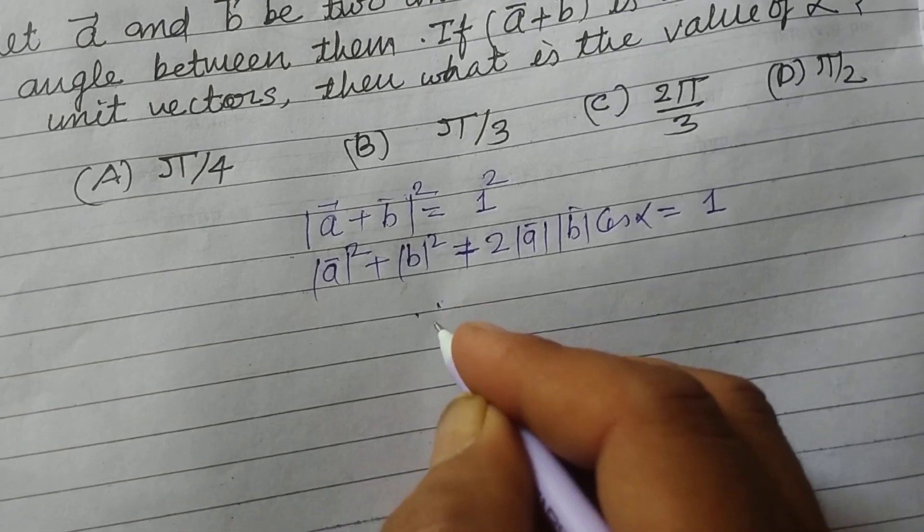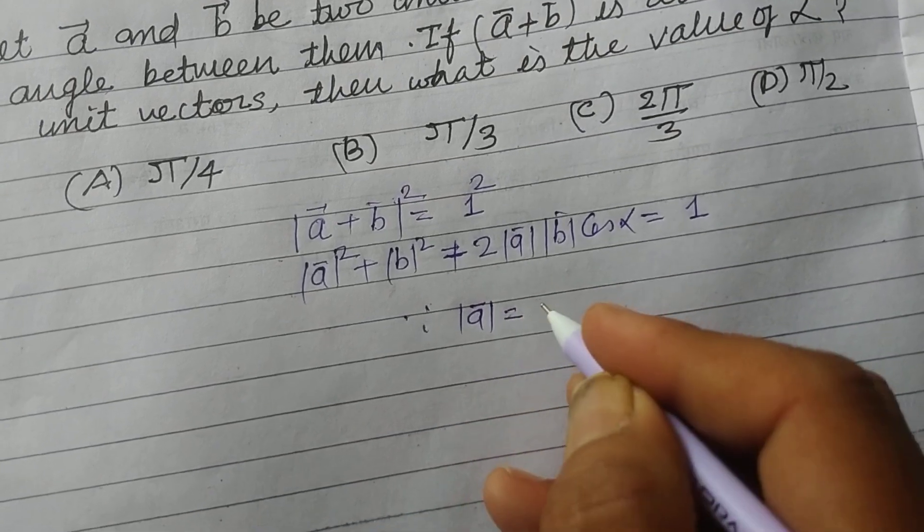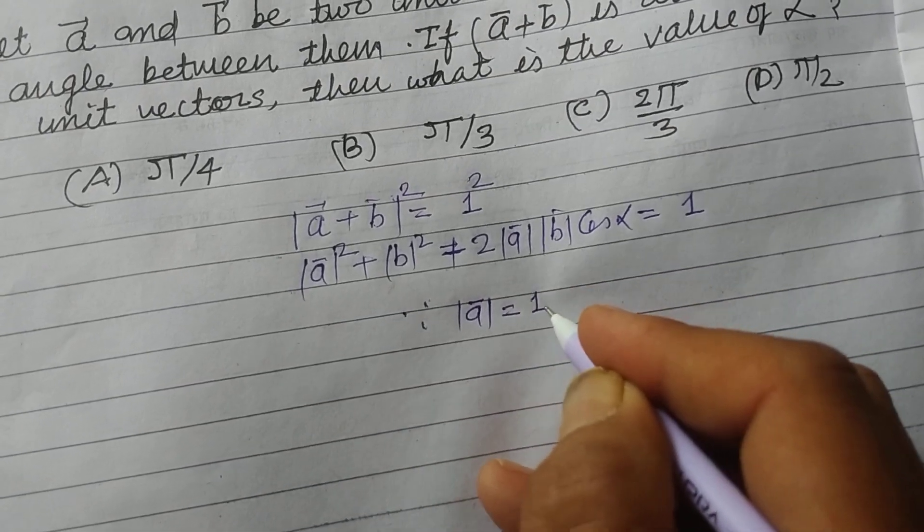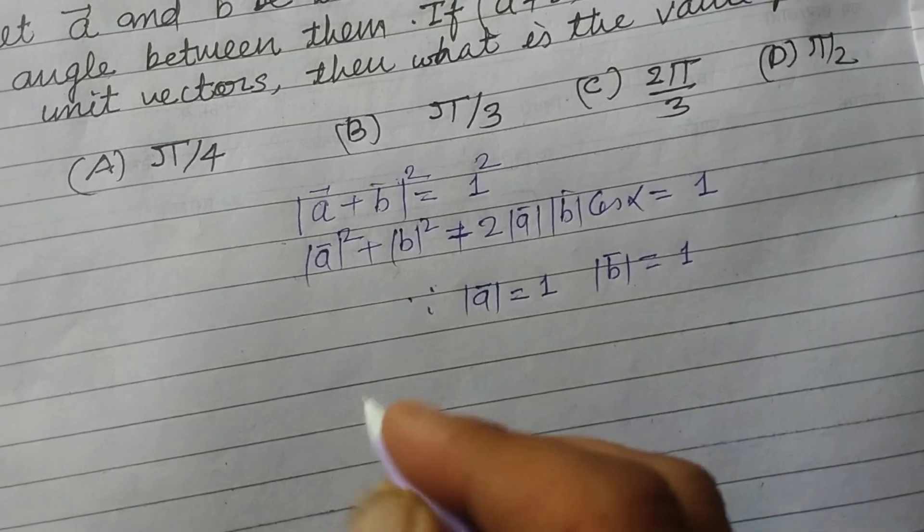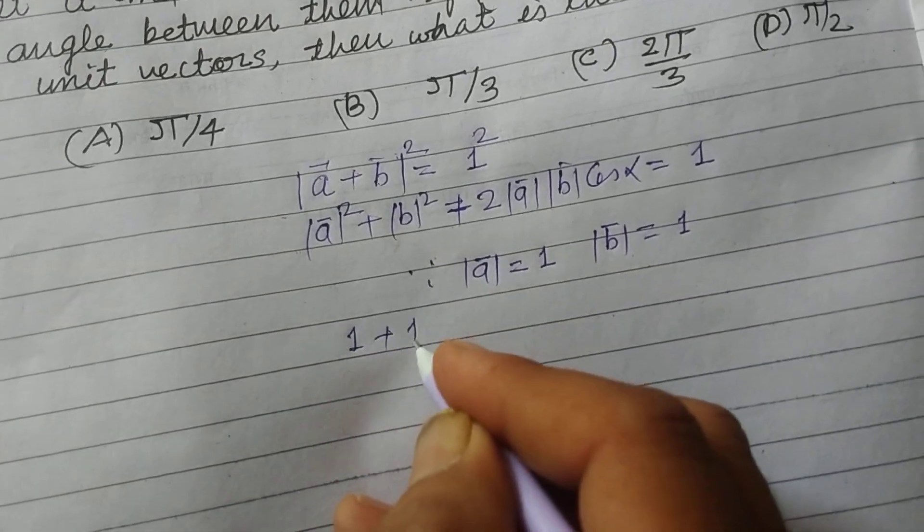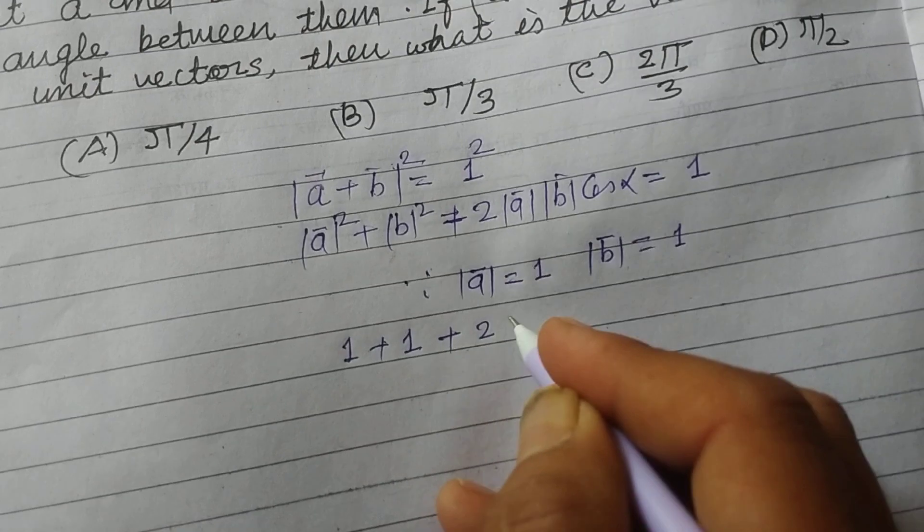Since A is also a unit vector, its magnitude is 1. And B is also a unit vector, so its magnitude is 1. So 1 plus 1 plus 2 into 1 into 1 cos alpha equals 1.